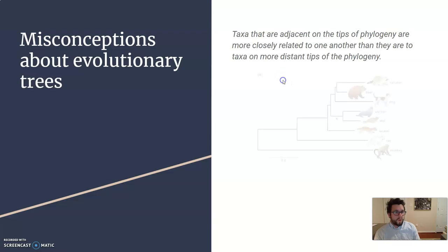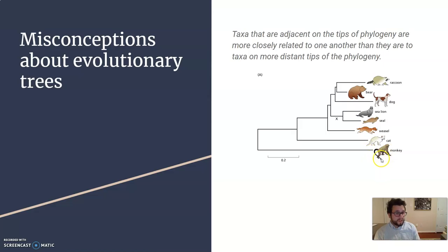Evolutionary trees. So we've seen trees like this before. Now, you might think that by looking at this tree here that a cat and a monkey are closely related because they're beside each other. That's not necessarily true. Or a sea lion and a dog are closely related. That's not necessarily true either. But it is saying that the sea lion and the seal are more related to each other than the weasel is to the sea lion. It's showing relationships. More related, less related.